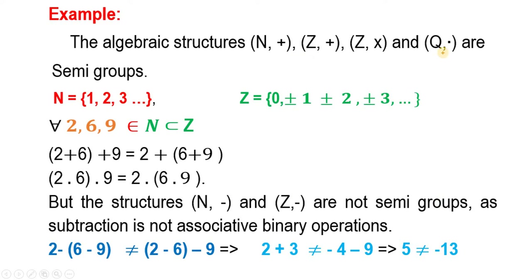یہ سارے semi-groups ہیں اور یہ دونوں semi-groups نہیں ہیں۔ یہ semi-groups اس وجہ سے ہیں کہ یہ تینوں groupoids ہیں اور associative properties ان میں hold ہوتے ہیں۔ یہ دونوں semi-groups نہیں ہیں کیونکہ یہاں پہ associative property hold نہیں ہو رہا۔ اس کے علاوہ subtraction کے لیے یہ groupoid بھی نہیں ہے۔